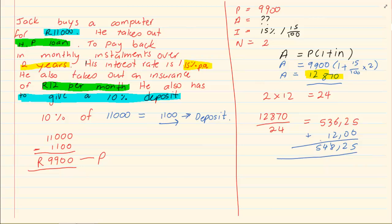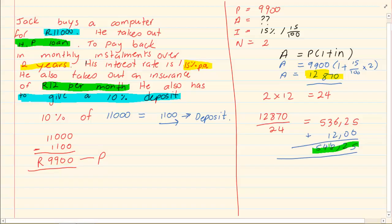How much is the total amount that he paid for the computer? We know that he is paying 548 Rand per month and we also know that he is paying it for 24 months.